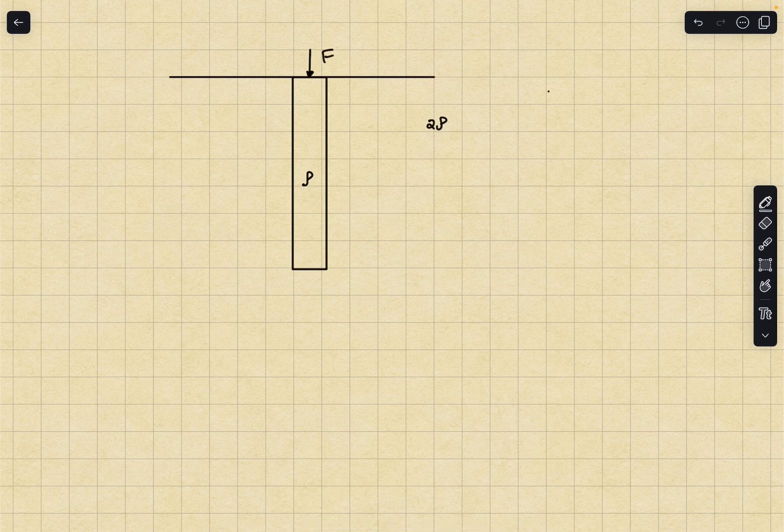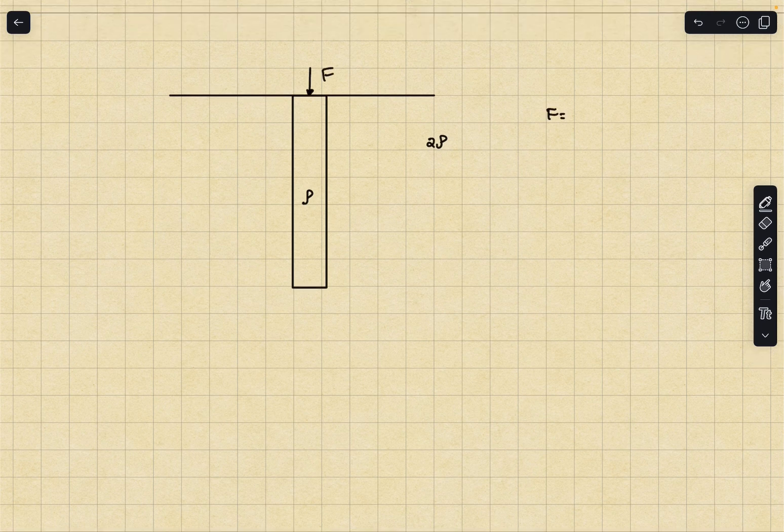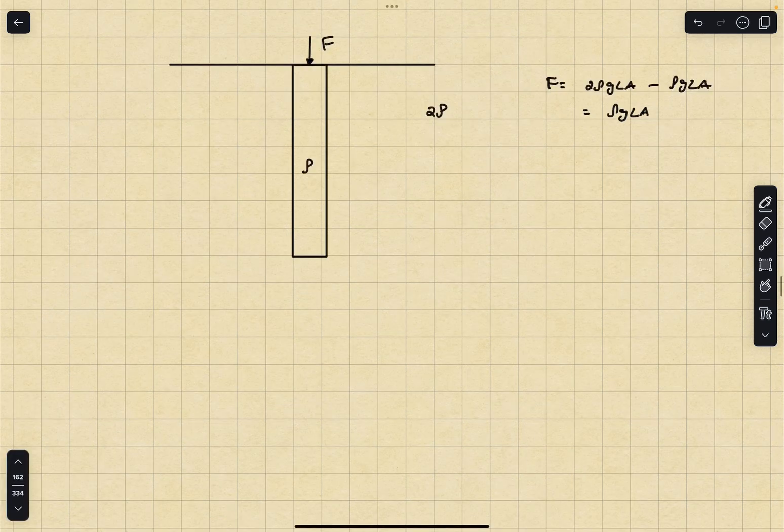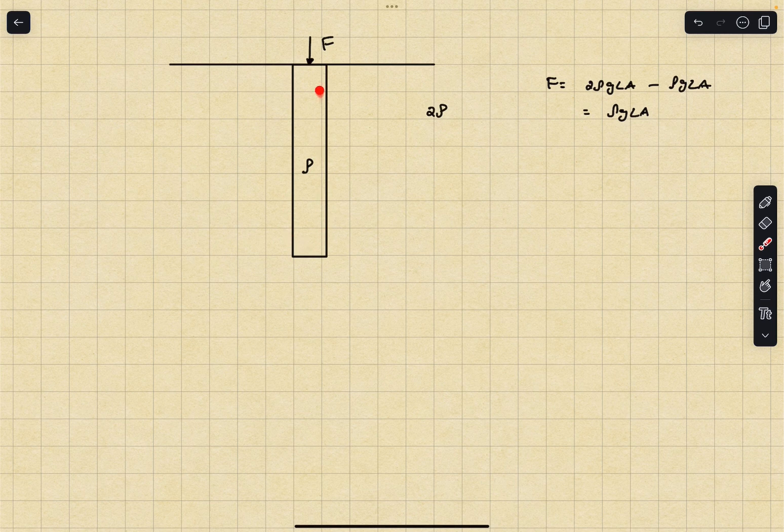First we can find F in one step. This is going to be the buoyant force which is 2 rho GLA minus the weight of the object which is rho GLA. So this comes out to be simply rho GL times A.